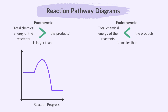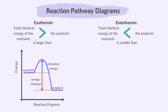Let's examine the exothermic reaction pathway diagram. The y-axis represents the energy level, where the energy of the reactants is higher than that of the products. The initial spike or bump in the curve represents the activation energy, which is the energy required to start the reaction. Following this, the energy level of the products is lower than that of the reactants, indicating that the difference in energy is released into the surroundings.